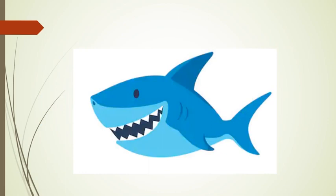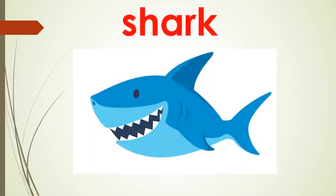Whose picture can you see on the screen? Can you name it? It's very easy. This is a shark. Its name begins with the 'Sh' sound. It's Shark. Please repeat after me — Shark. Shark.